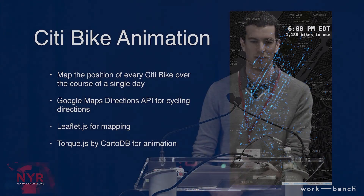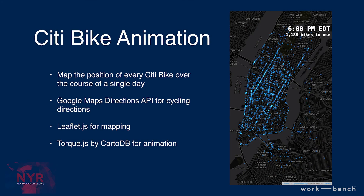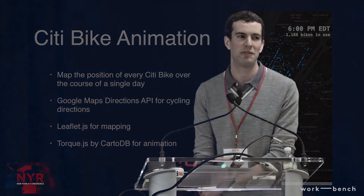The city bike animation maps the position of every city bike over a day. It uses a couple of different tools: I got cycling directions from the Google Maps API, used Leaflet.js for mapping, and a library called Torque.js by a New York startup called CartoDB, which does the actual animation. For every bike trip, you know the start station, the end station, the timestamps, and the suggested route — so you can interpolate at every second where each bike is, and you end up with this nice series of blue dots running around.